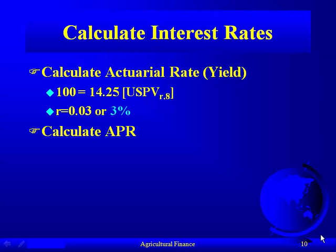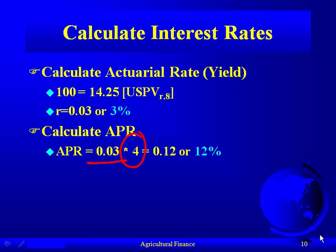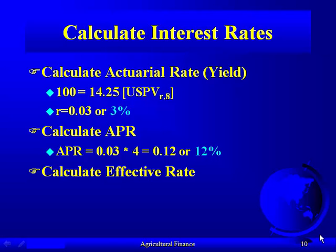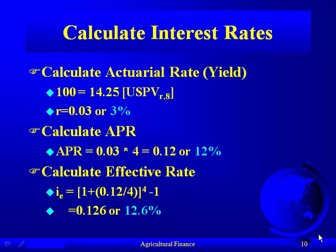So what is the APR? To calculate the APR, you take the actuarial rate — the quarterly yield of 3% — and multiply it by four, the conversion period. Since this is a quarterly rate, interest becomes part of the principal every three months. So our APR is 12%, which happens to be the same as the contractual rate. Because this is quarterly payments, we want to convert to an effective rate using the formula: one plus APR divided by conversion periods, raised to the number of conversion periods, minus one. Plugging that in gives 12.6%.